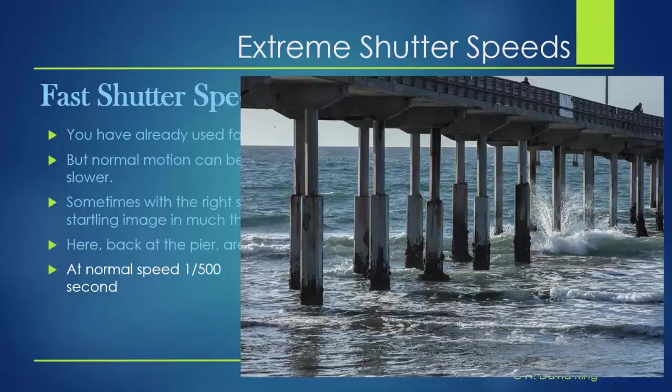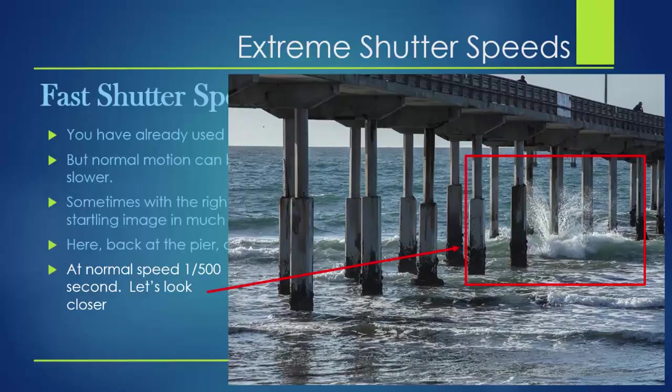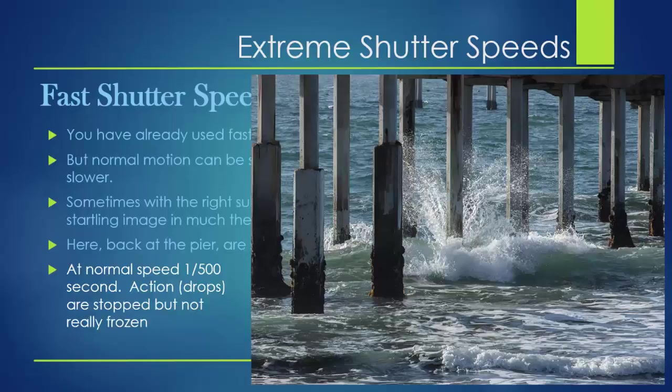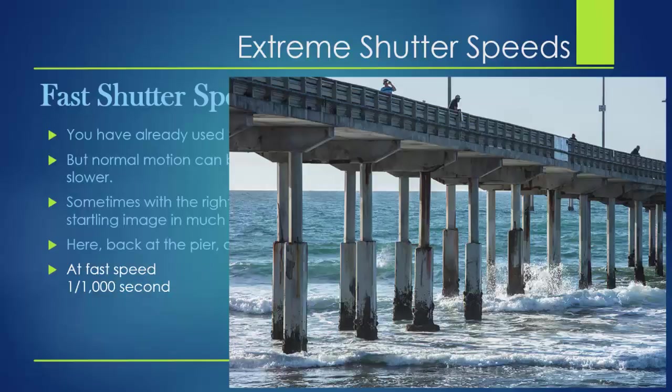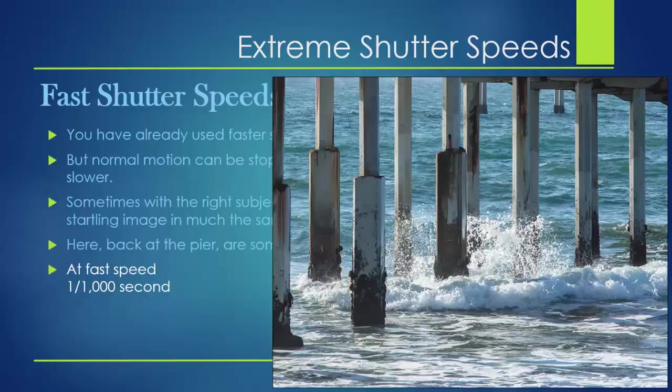Here's a normal shot of the pier at 1/500th of a second. It looks like we've captured the spray, but if we zoom in on the area outlined with the little red box, we realize those water droplets are blurred. Many tiny droplets are actually blurred into a single big droplet because the shutter speed just isn't fast enough. But suppose we speed it up to a 1/1000th of a second. If we zoom into the same area, things are looking a little different — we can start seeing individual droplets.